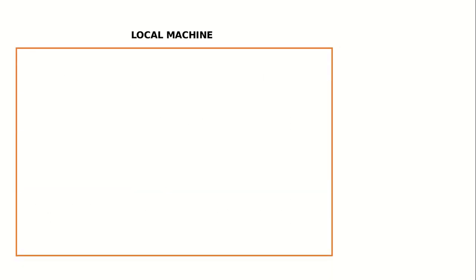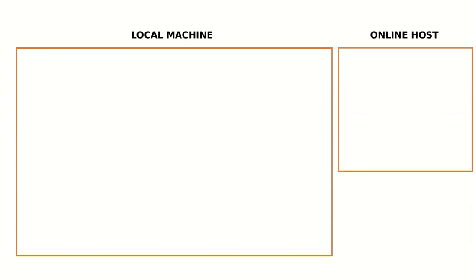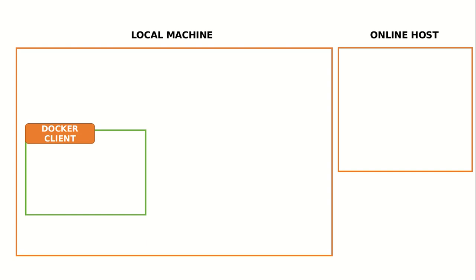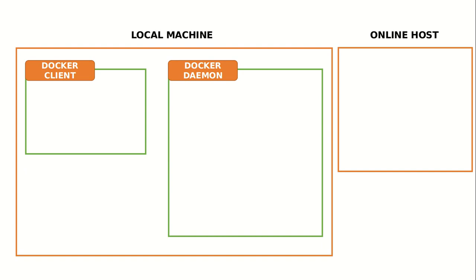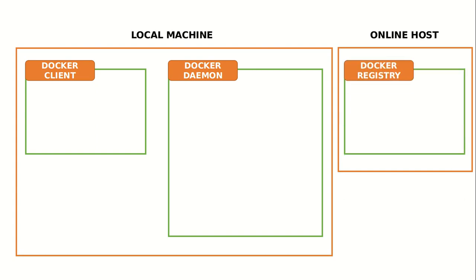When we talk about the architecture, we will have the local machine and we will have an online host. Within the local machine, we will be installing Docker, which will give us the Docker client and the Docker daemon. So whenever we install Docker on the local machine, we get a Docker client, Docker daemon, and the interface between these will be the REST API. On the online host, we will have a Docker registry — which in our case will be Docker Hub.